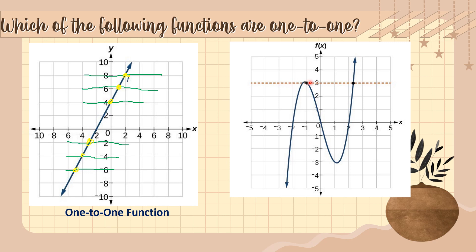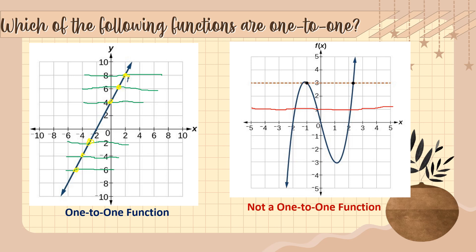Here we have the blue line as our graph and the red dotted line as the horizontal line. Applying the horizontal line test, the horizontal line hits the graph at more than one point — in fact it can intersect up to three times. Because the horizontal line hits the graph more than once at multiple positions, picture number four is not a one-to-one function.